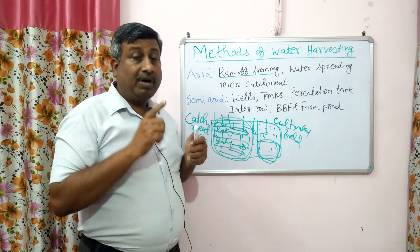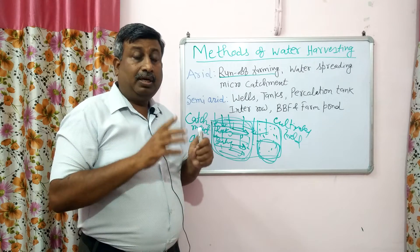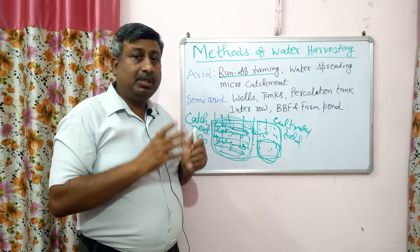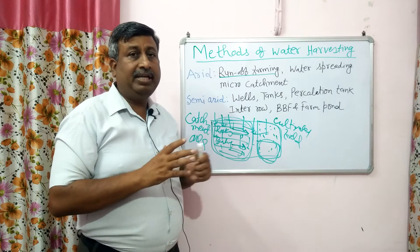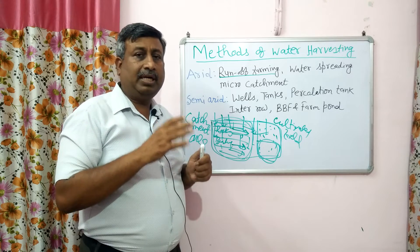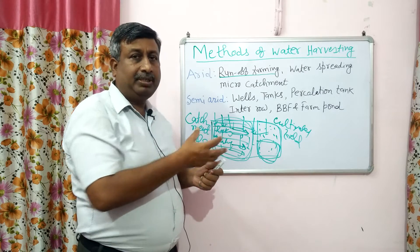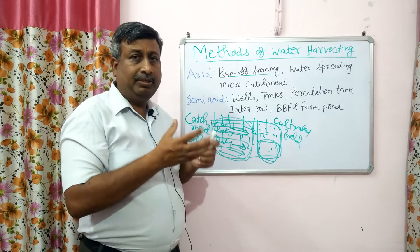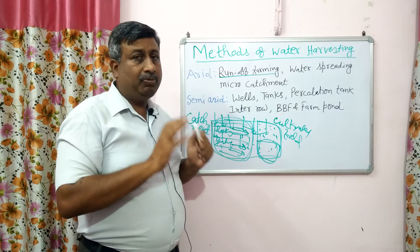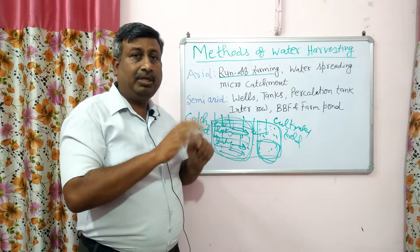Run-off induced farming is done only in low rainfall areas, not in high or medium rainfall areas. Because in high and medium rainfall areas, there is sufficient percolation and water is available in the root zone and groundwater. If we induce run-off in high rainfall areas, the soil will be lost.